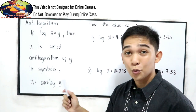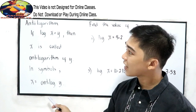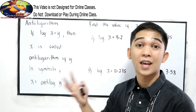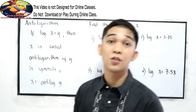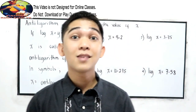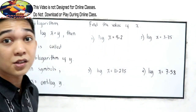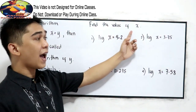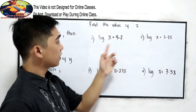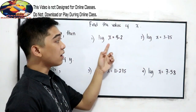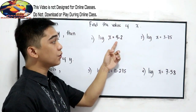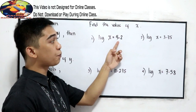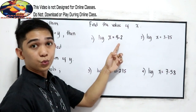To better understand the application of antilogarithm, let's have the following examples. Find the value of x. Log x is equal to 4.2.